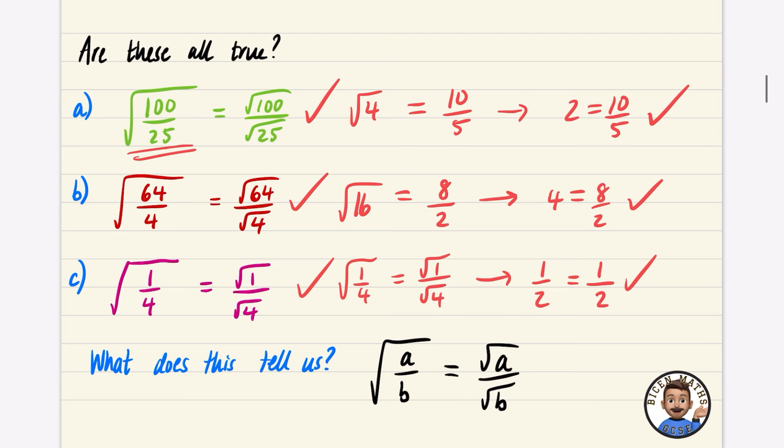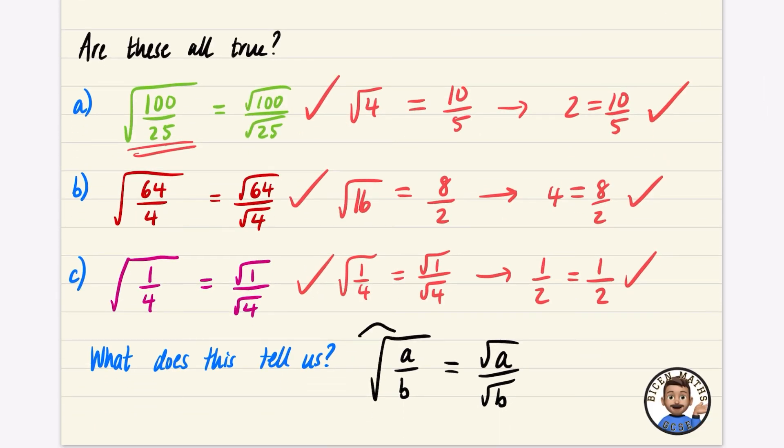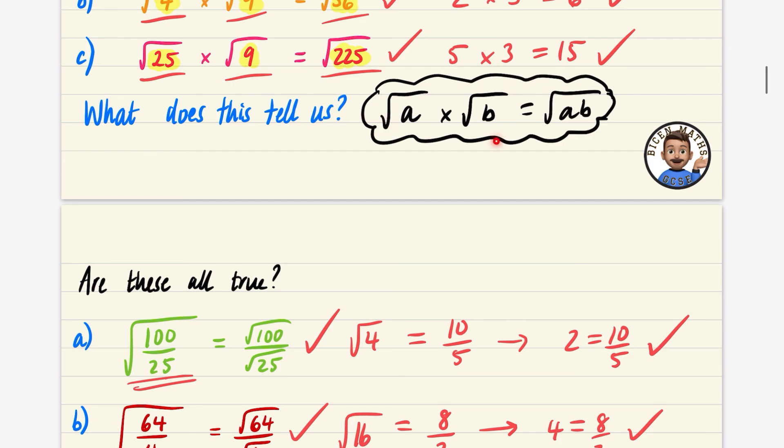You're going to need to know this, because it's going to help us on skill number two. I'm going to put a little box around this, which is about simplifying surds. But this is the first thing that we need to know, is that you can do this property and this property here.